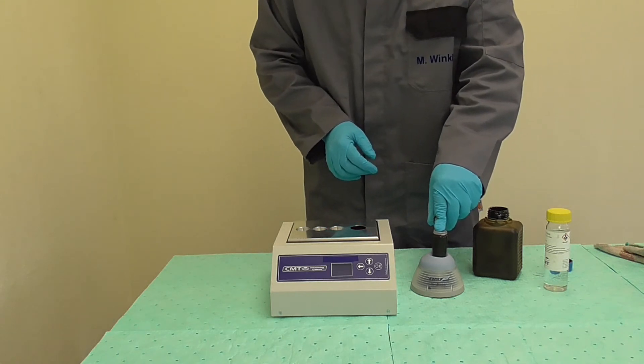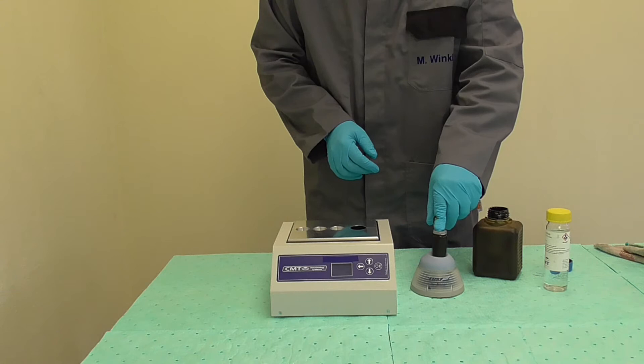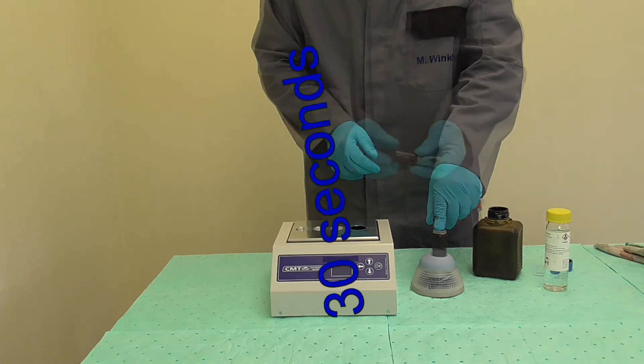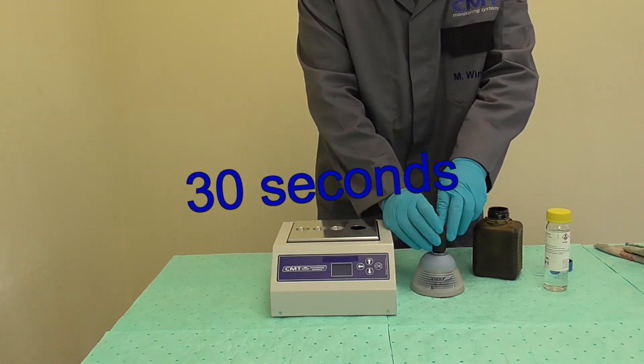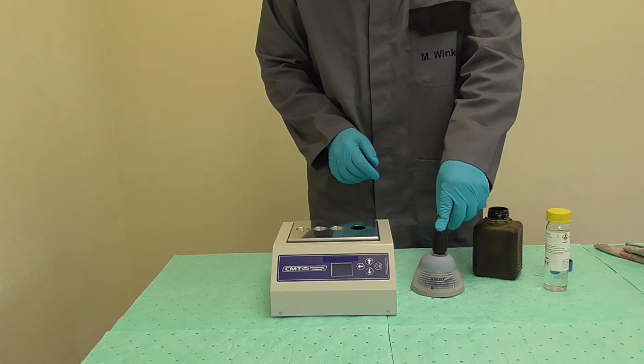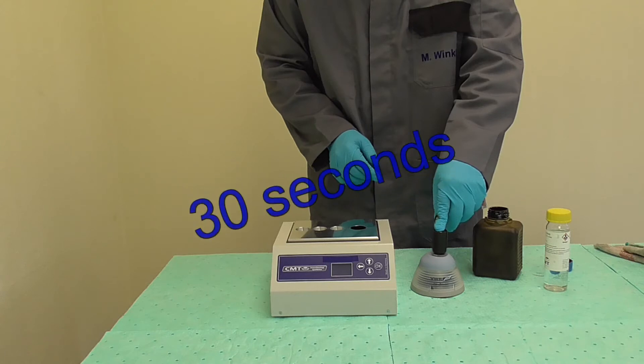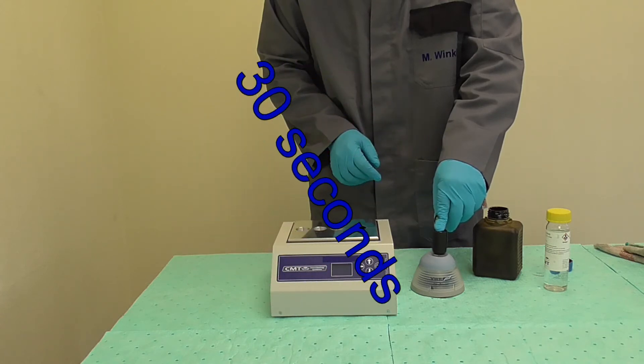Use your index finger only on the vial's top to hold it in position. Turn the vial upside down after 30 seconds. You need to press firm enough to ensure good mixing. The contents of the vial should appear as a homogeneous black fluid after mixing.